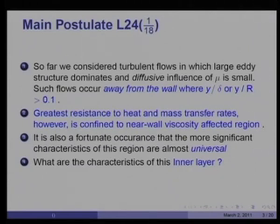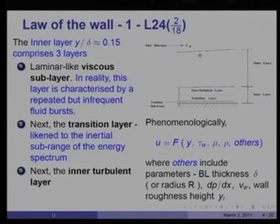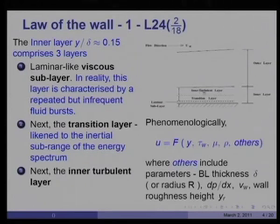It is the inner region which is of great importance to us because the greatest resistance to heat and mass transfer occurs close to the wall — the region in which viscosity plays its dominant role. That is where the fluid flow is sluggish, and likewise the heat and mass transfer is also very sluggish. Now it is a very fortunate occurrence — quite an accident of nature — that the most significant characteristics of this inner region are almost universal, and we are going to exploit this universality to predict friction factor and Nusselt number.